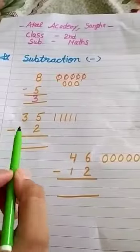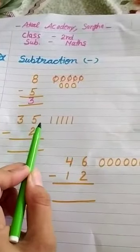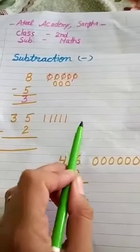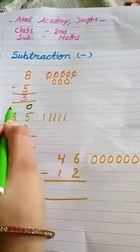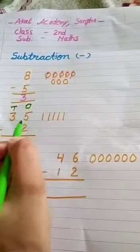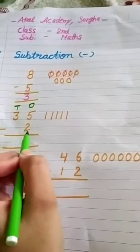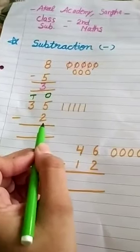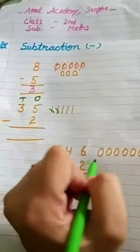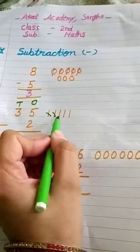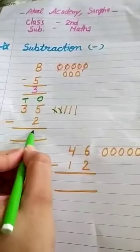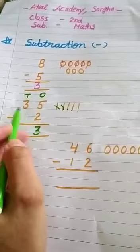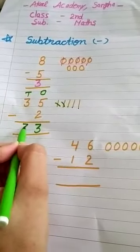Next statement: here is 35 and 2. No need to draw 35 lines. Just see the value of ones. Here is ones 5 and here is 2. Draw 5 lines only and cut 2 lines: 1, 2. How many are left? Count 1, 2, 3. The answer is 3. And here no number is given, so we will write here only 3.